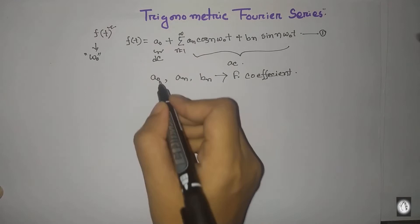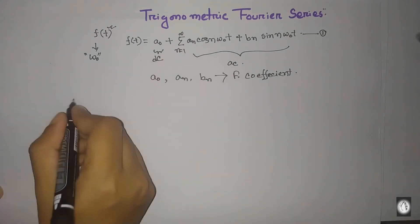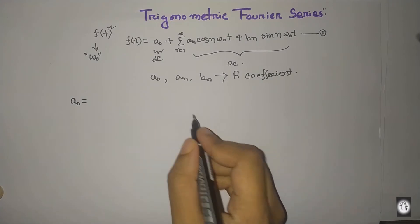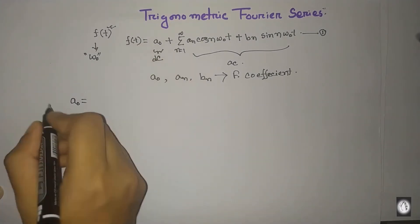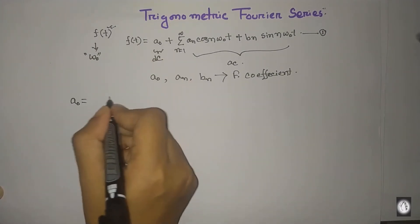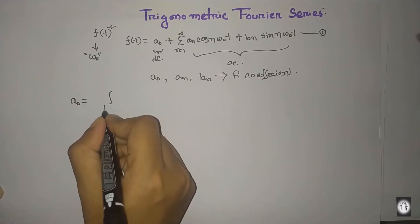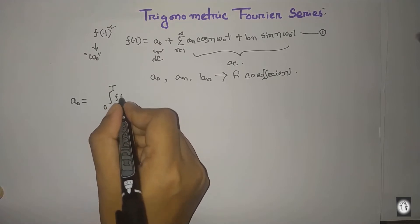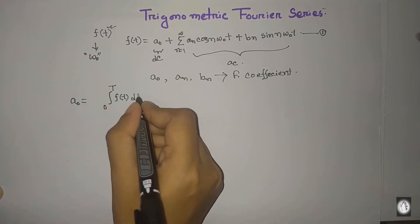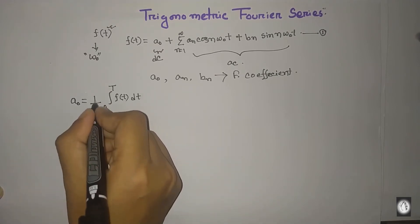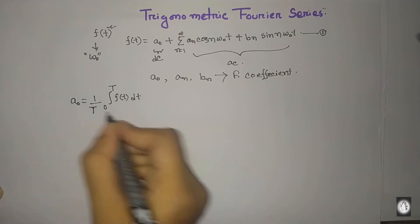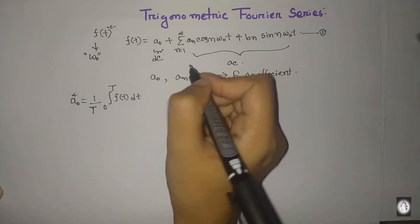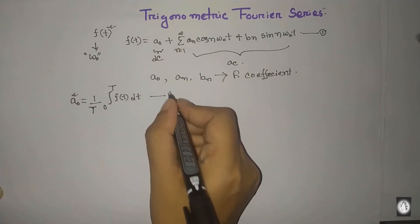The first term we start with is the DC component A0. This is the average of the function over one time period. The formula is: A0 equals the integral from 0 to T of f(t) dt, divided by the time period T.